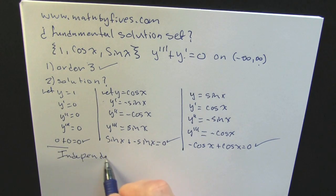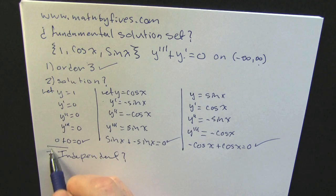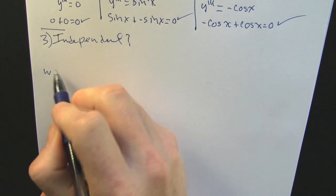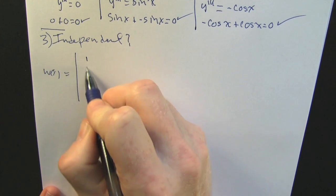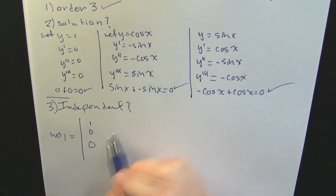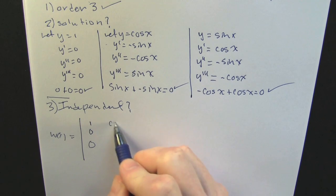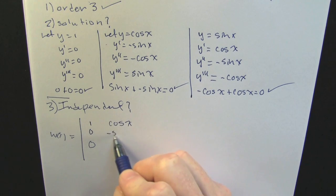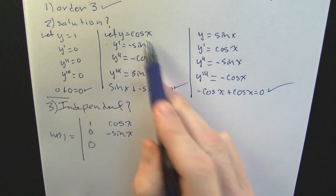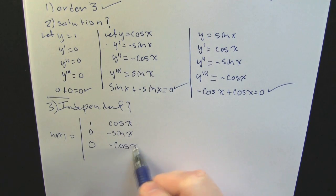Now he's going to check for independence. He's going to check the Wronskian. He's going to line up the functions across the top row of that determinant. And then he's going to differentiate them down the side two times. This creates a square array which can be determinatable.